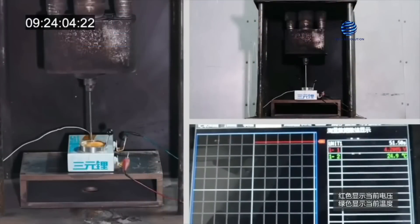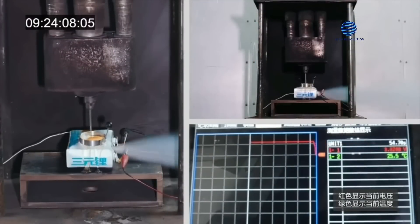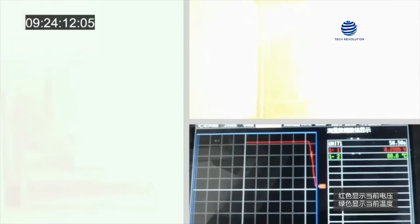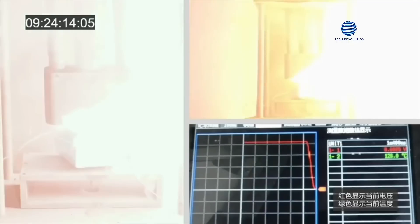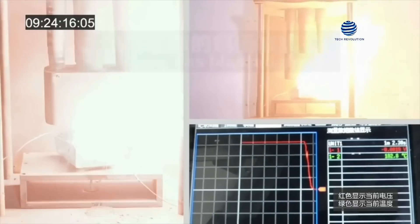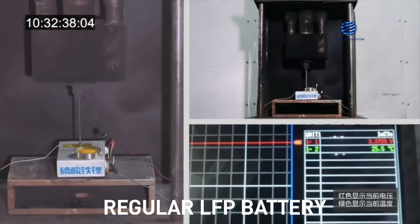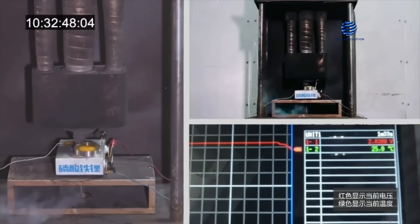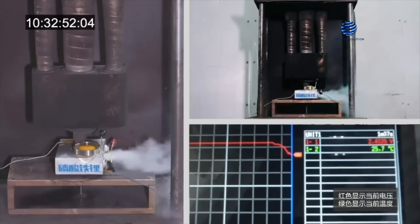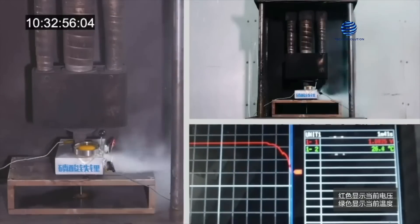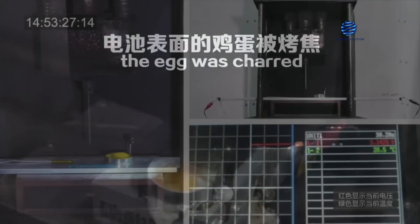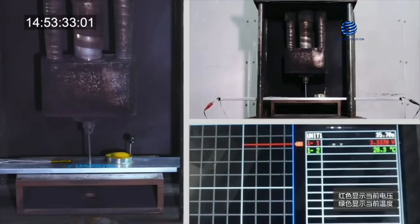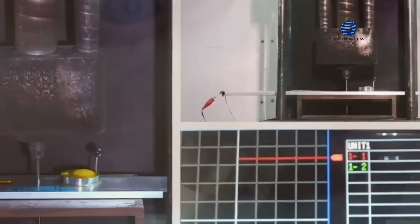In the lab, three different types of batteries were tested for nail penetration. First, an NMC battery was put to the test with an egg on top of it. When the nail pierced the NMC battery, it exploded instantly. A regular LFP battery was penetrated in the second test with a raw egg placed on top. The egg was burned as the test progressed, with temperatures reaching 400 degrees. Finally, the egg remained uncooked after the nail pierced the BYD blade battery, indicating no heating issues.